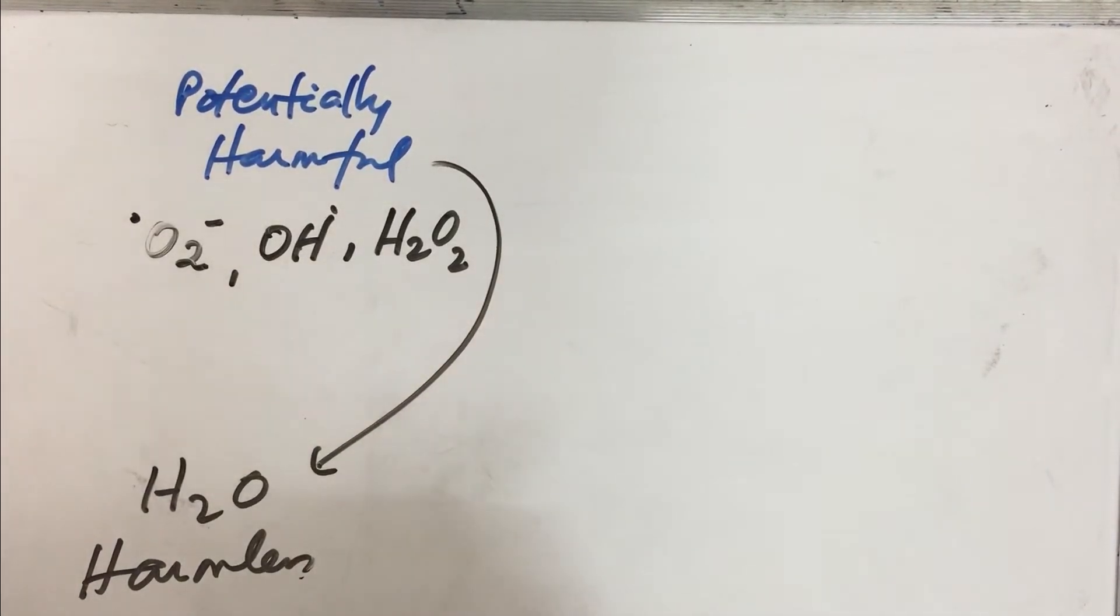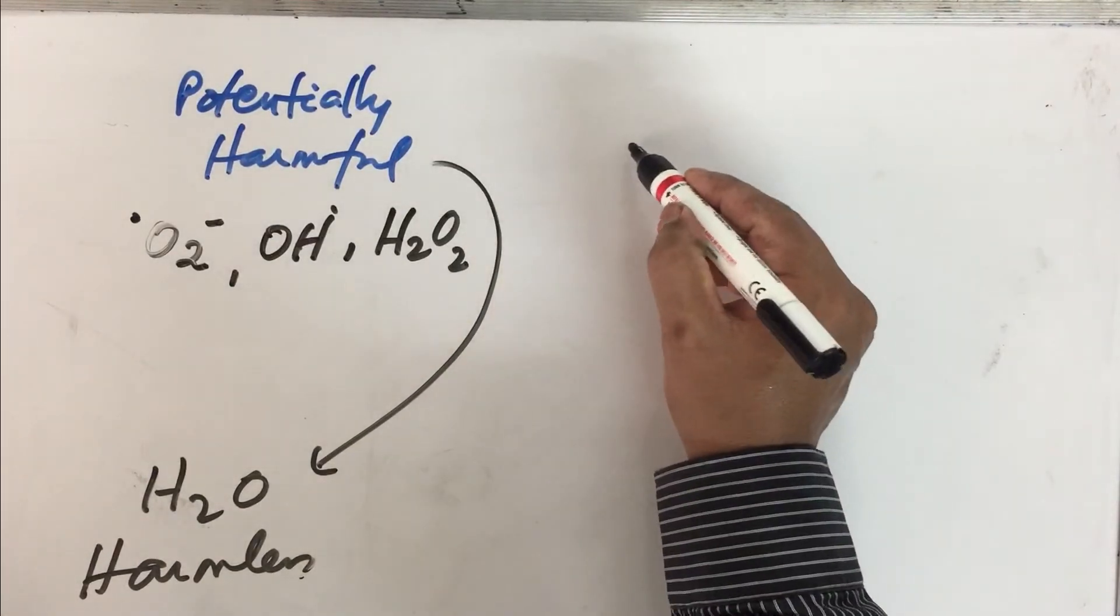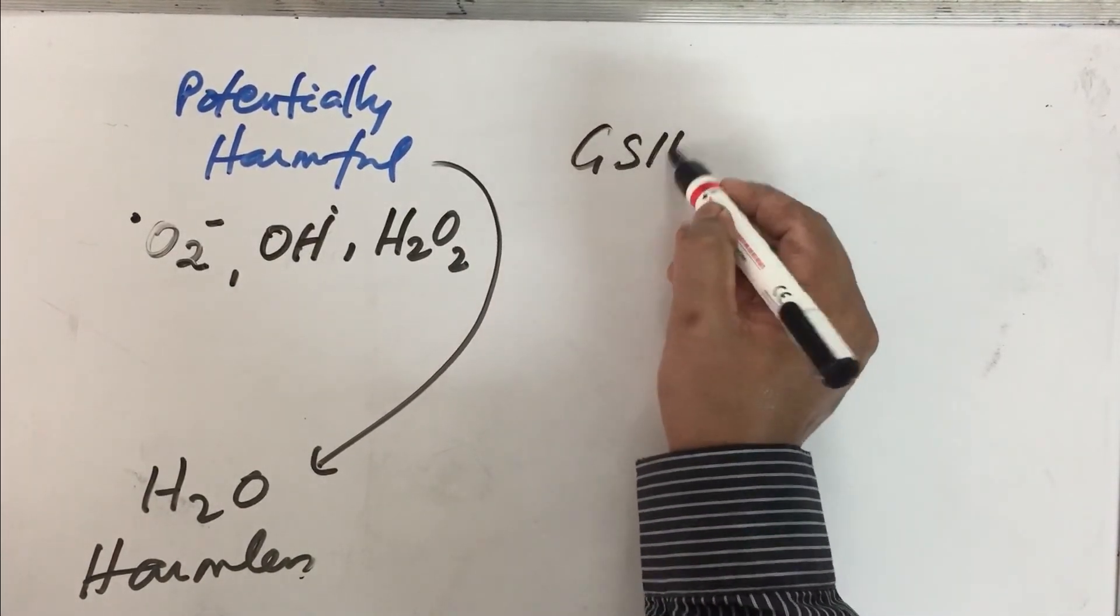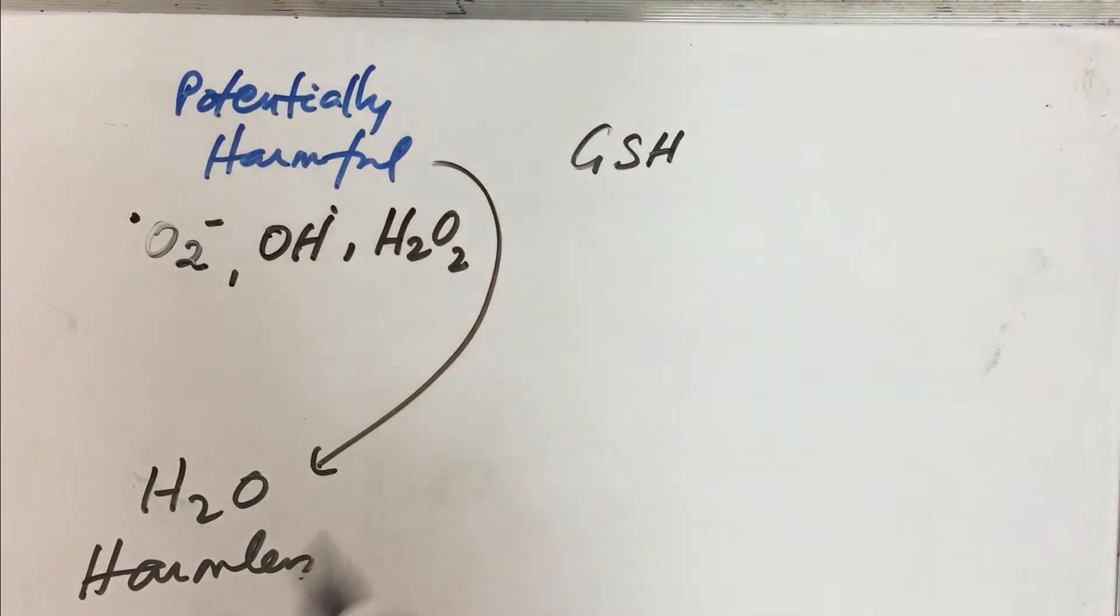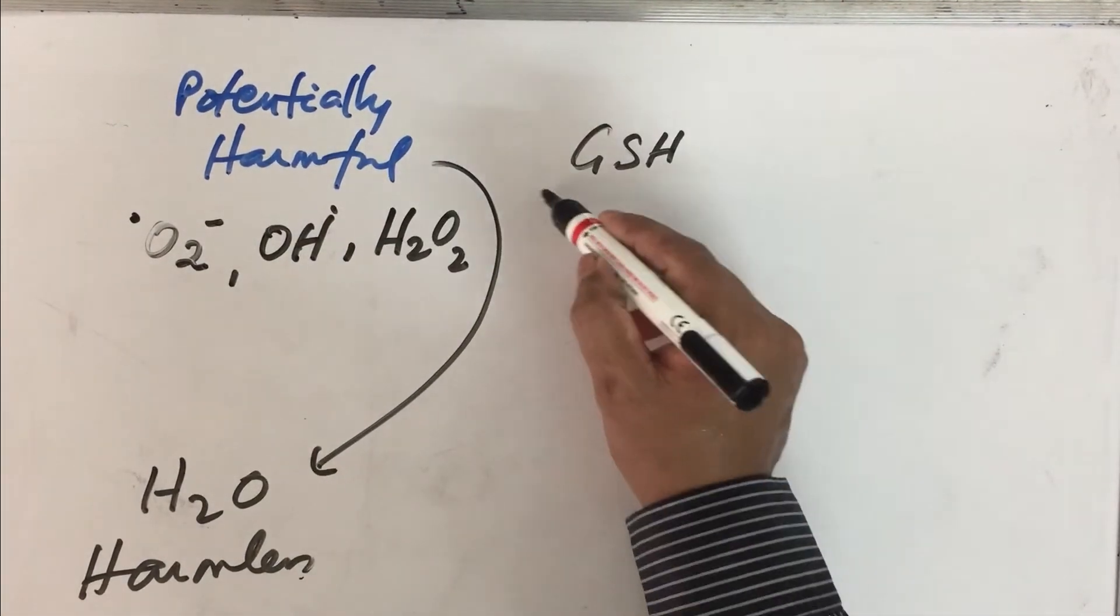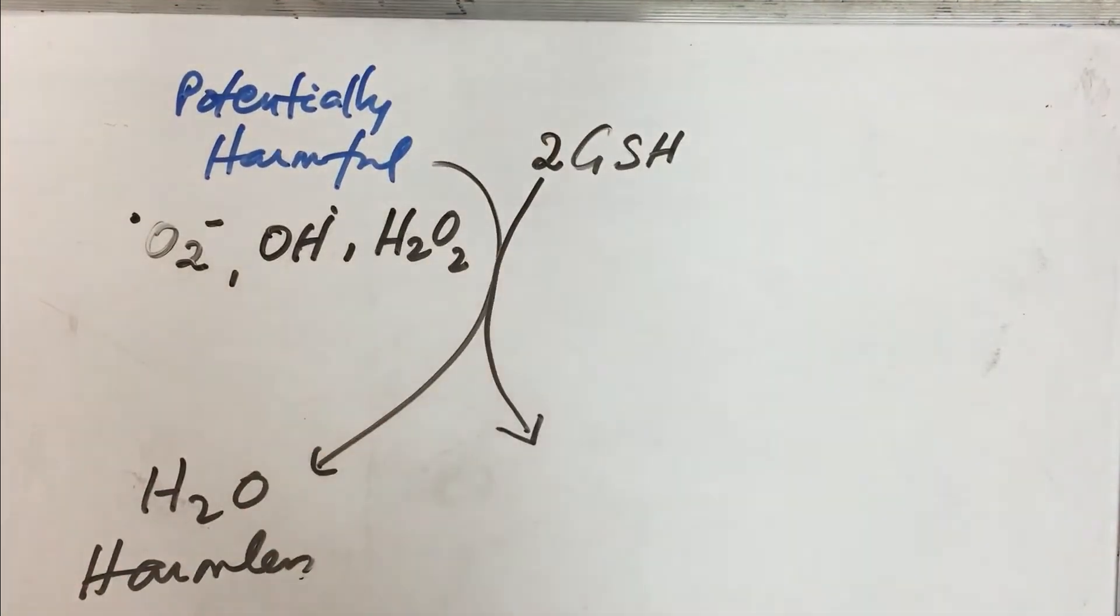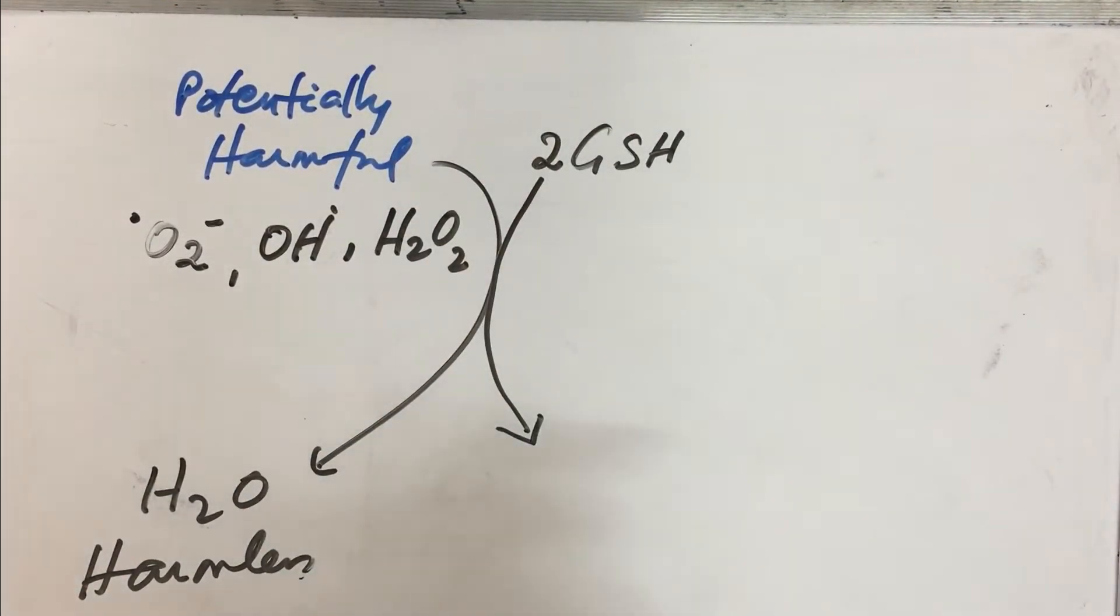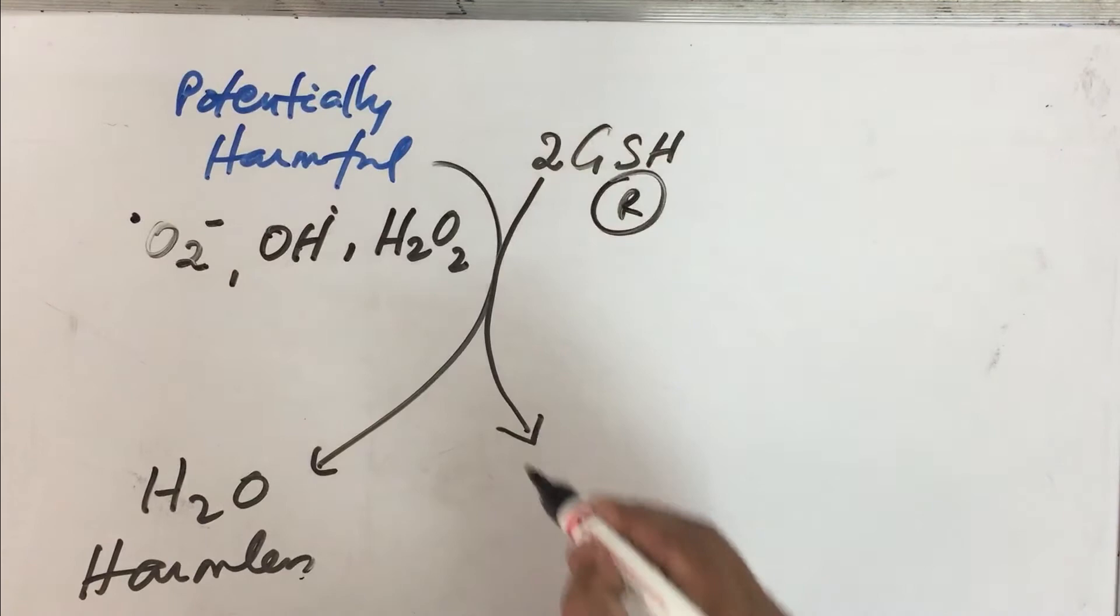In order to do this reduction process, we need a molecule called GSH, glutathione. It has got three amino acids: glutamine, cysteine, and glycine. Cysteine has got a sulfhydryl group. Two such molecules are present. The sulfhydryl group is transferred to these free radicals and converted to water molecule. What happens to glutathione? It gets oxidized from the reduced form to the oxidized form of glutathione.